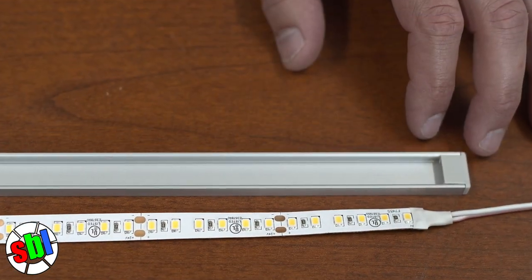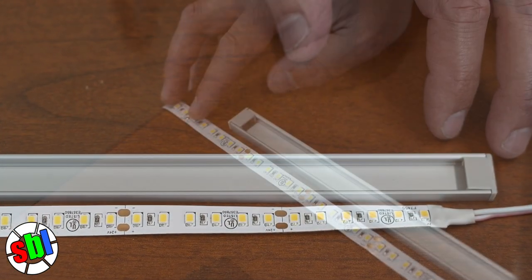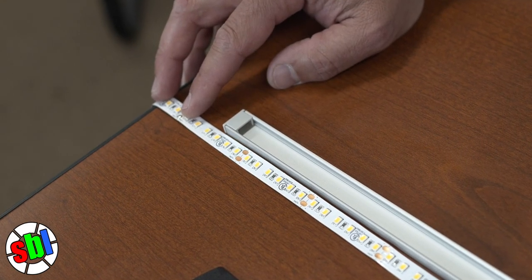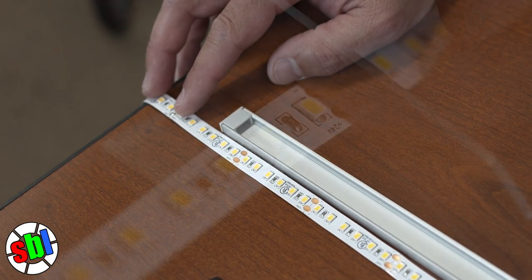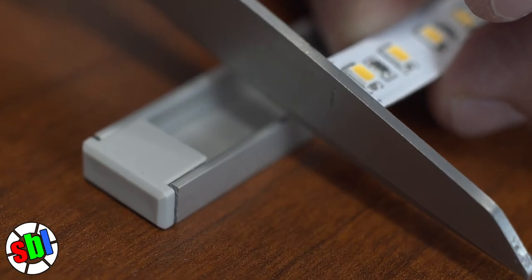Next we will cut the LED strip to place in the channel. Without removing the adhesive backing, place the LED strip inside or along the aluminum channel to find the nearest cut point and cut the strip at that length.